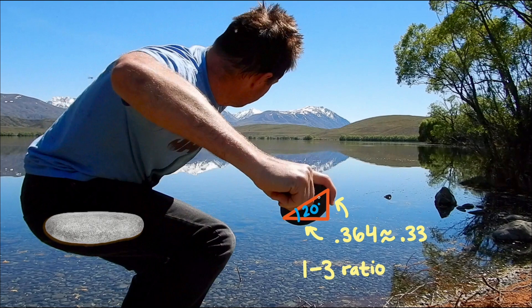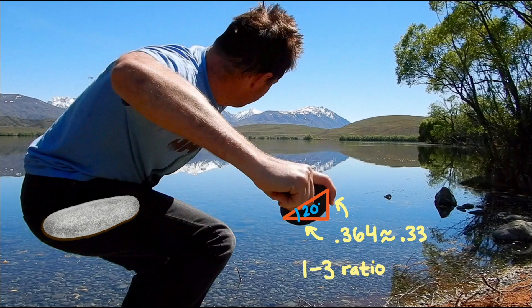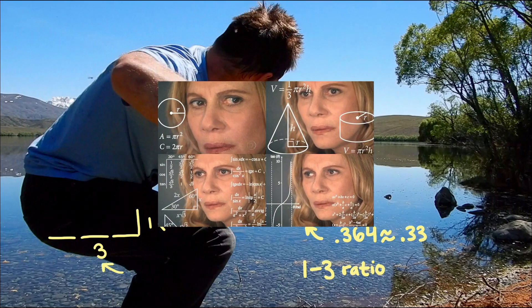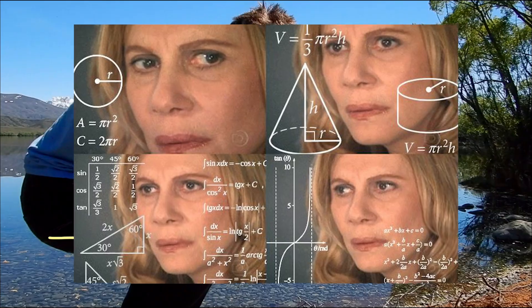We can use this rule of thumb now to help us with our rock skipping. When you angle the front of the rock up, then imagine a right triangle coming down from the front and then over to the back. You want the vertical leg of the triangle to be about one third of the length of the horizontal leg. For many of us, this method might be easier to estimate than just judging an angle of 20 degrees.